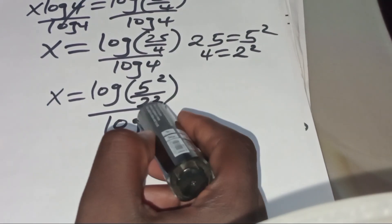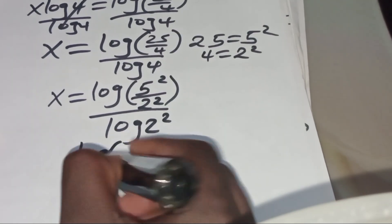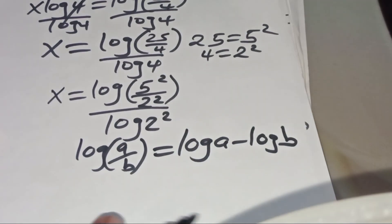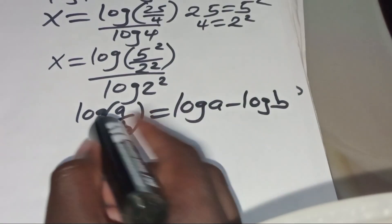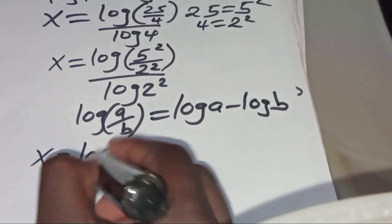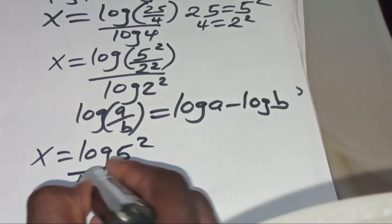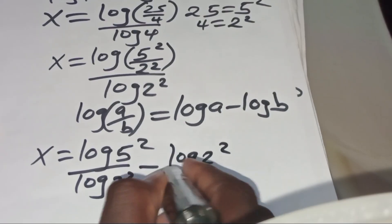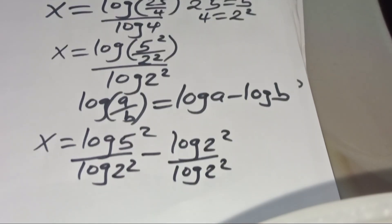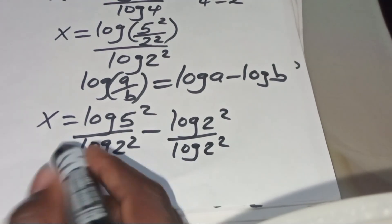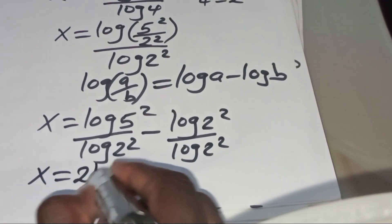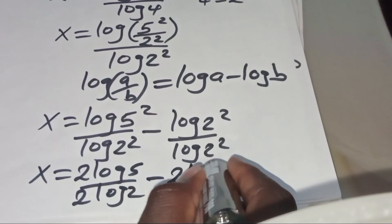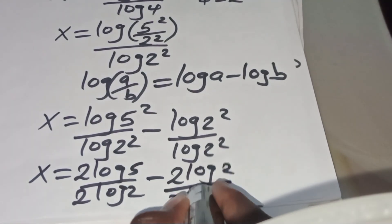Now √(5²/2²) is actually in the form of √(a divided by b), which we can express as √a divided by √b. Applying this property, we'll have x equal to √(5²) divided by √(2²), minus √(2²) divided by √(2²). Applying the power-root property, √(5²) becomes 2√5, divided by 2√2, minus 2√2 divided by 2√2.